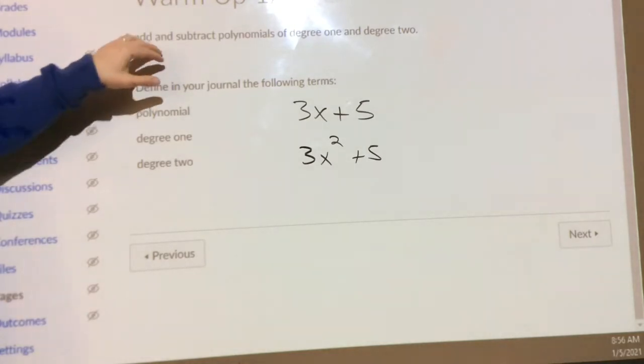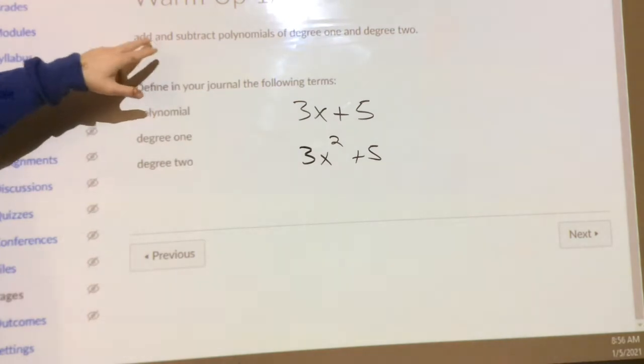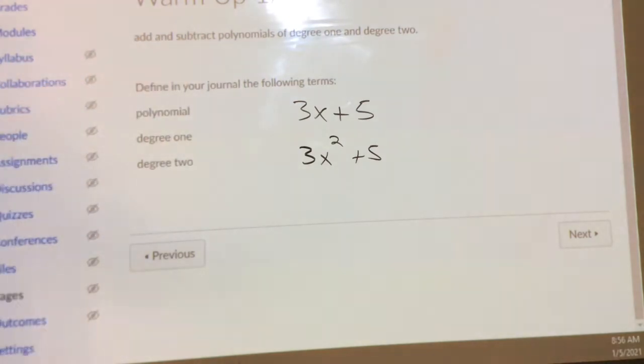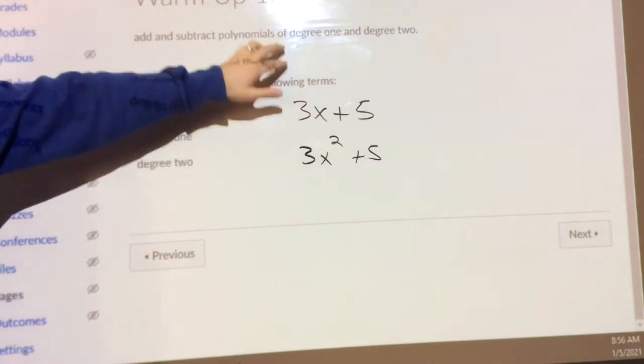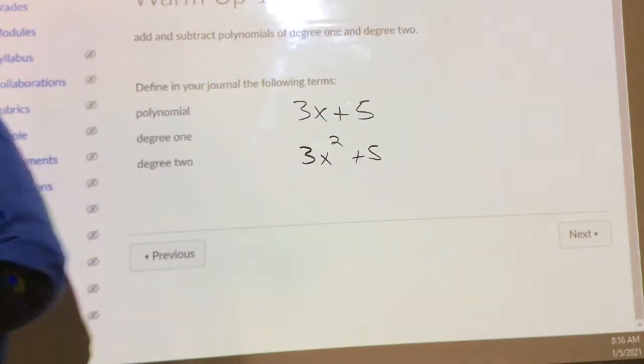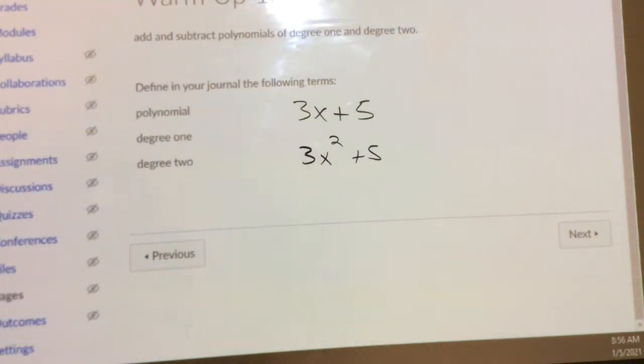Now this is our topic that we're studying today. We're going to talk about adding and subtracting polynomials of degree 1 and degree 2. Notice that none of my exponents are ever going to exceed the exponent of 2. That's what I want you to understand. My exponents are never going to exceed the value of 2 on this.